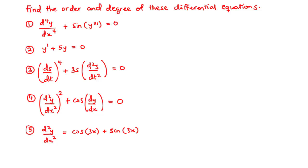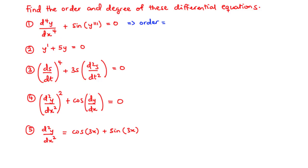The order of a differential equation is the order of the highest derivative in the differential equation. Now let's consider the first example: the fourth derivative of y with respect to x, plus sine of the third derivative of y with respect to x, equals zero. We have two derivatives here — the fourth derivative and the third derivative. The fourth derivative is the highest, hence the order of this differential equation is 4.